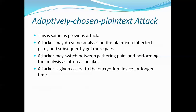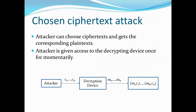In a chosen ciphertext attack, the attacker can choose ciphertexts of his own choice — C1, C2, C3, ..., Cn — and submit them to the decryption device to get the corresponding plaintexts M1, M2, ..., Mn. The attacker is given access to the decryption device only once, collects and analyzes the pairs, and then has access taken away. A target ciphertext is given, and using his pair analysis and knowledge, he must determine the corresponding plaintext. Successfully doing so constitutes a successful chosen ciphertext attack.